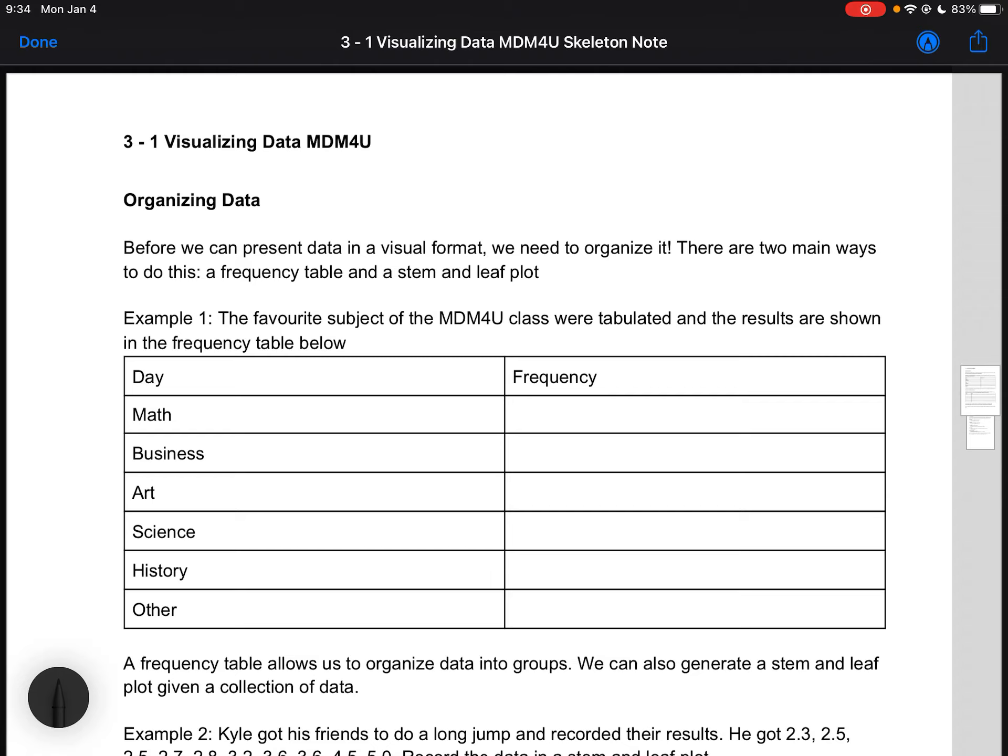There are two main ways to do that: we can use a frequency table or a stem and leaf plot, which really represent the same data but have some different benefits. This example you can find from our class notes and I will post it on D2L afterwards.